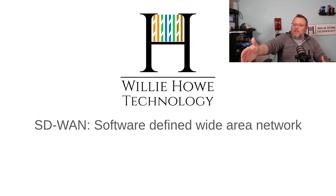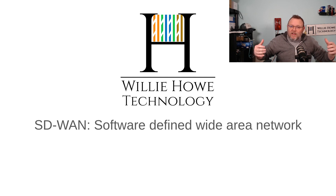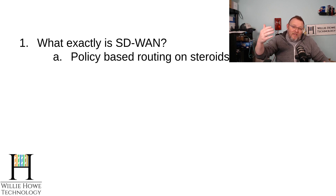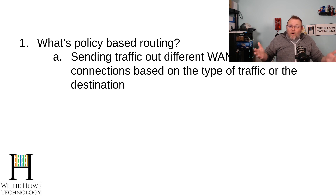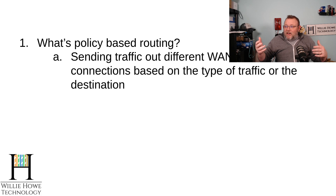There's a little presentation that I put together. SD-WAN — software-defined wide area network. So what exactly is SD-WAN? It is a software-defined wide area network. A wide area network is a network that you have access to over a larger geographical area. Basically, SD-WAN is policy-based routing on steroids. Policy-based routing is sending specified traffic out of different WAN, internet, or VPN connections based on the type of traffic or the destination.